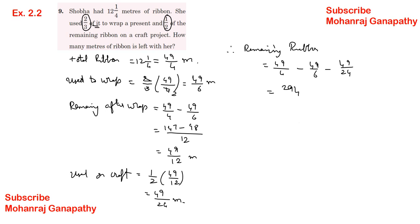294 minus 196 minus 49 divided by 24. The answer is 49/24 meters remaining ribbon.